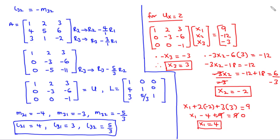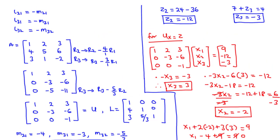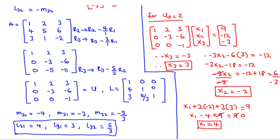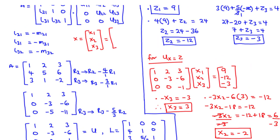Therefore, we have the solution vector X equal to the column matrix X1, X2, X3, which is equal to 4, negative 2, 3.